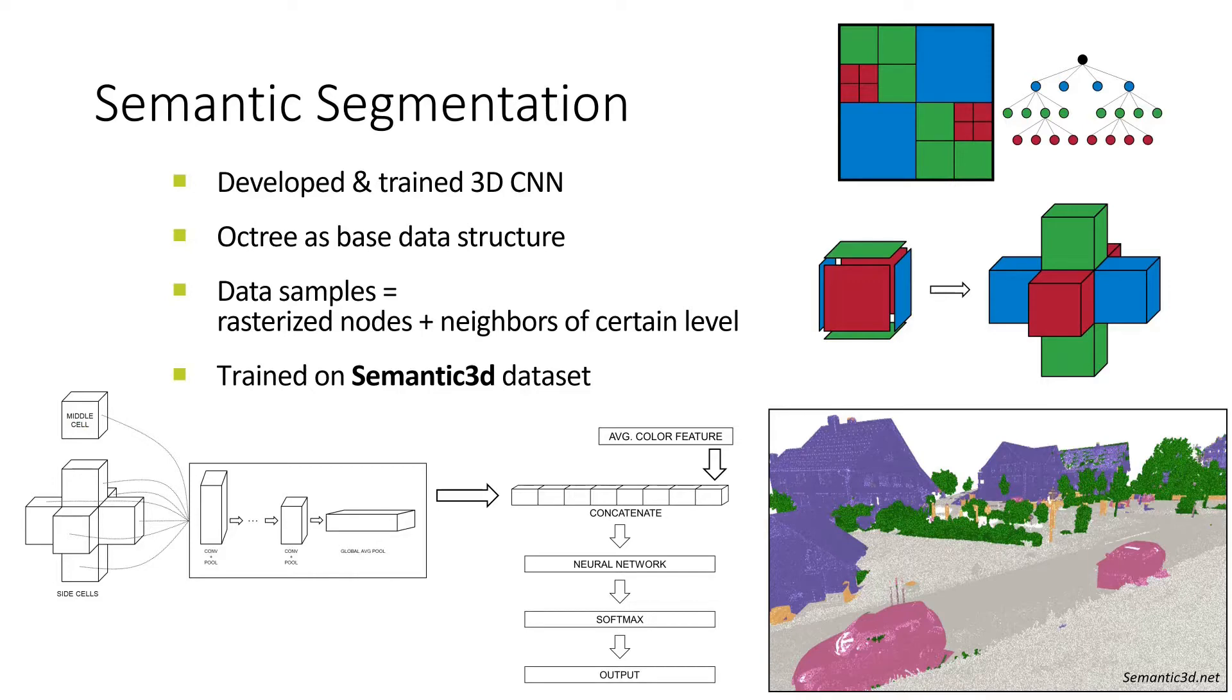We trained our 3D CNN running on binary occupancy values and an average point color feature on the semantic3D dataset.